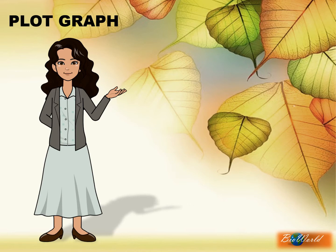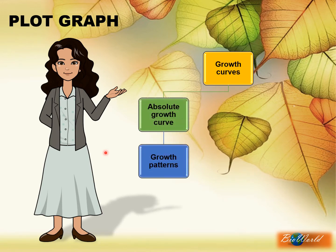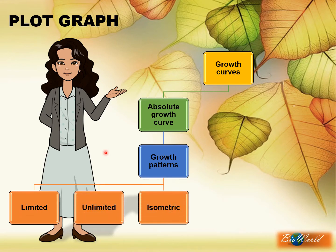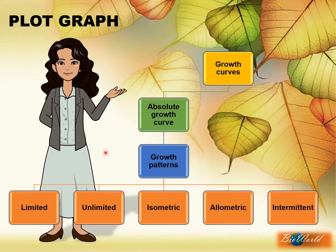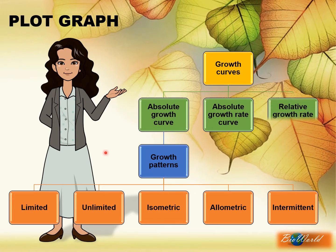What type of graphs are there? We can plot growth curves. There are three types of growth curves. The absolute growth curve has five different patterns which include limited growth pattern, unlimited growth pattern, isometric growth pattern, allometric growth pattern, and intermittent growth pattern. If we don't want to do an absolute growth curve, we can choose to plot an absolute growth rate curve or even a relative growth rate curve. But you can clearly see the most direct and simple curve is the absolute growth curve.